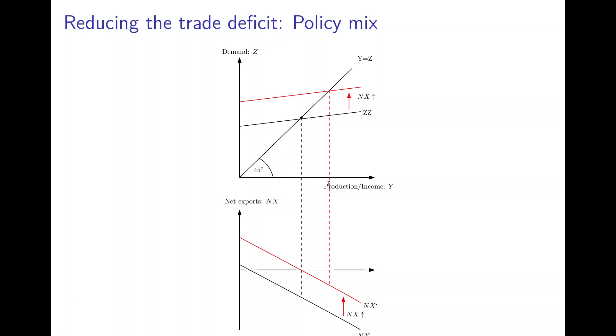However, the problem is that other things are happening. Particularly, if there is such an increase in net exports, then the ZZ curve would shift upwards. So incomes would rise, there would be a new equilibrium, a multiplier effect would set in, and in such an equilibrium there would again be a trade deficit.